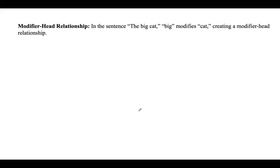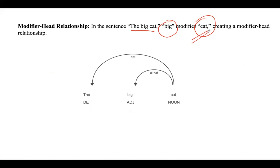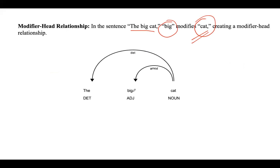The second one is the modifier-head relationship. If you take 'the big cat', the word 'big' modifies 'cat', just like the 'black car' example — whether the cat is big or small, that term modifies the word 'cat', creating a modifier-head relationship. Between 'big' and 'cat' there is a modifier, and between 'the' and 'cat' there is a determiner relationship.